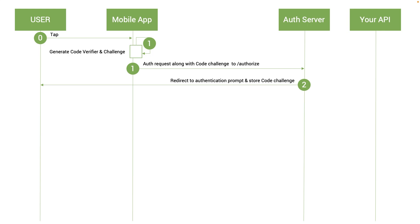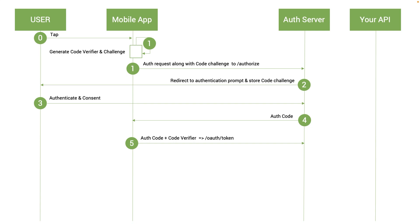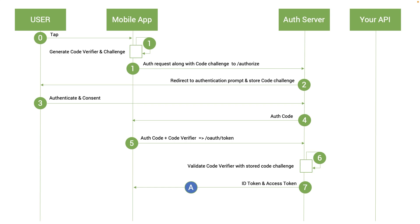The server stores the code challenge and redirects to the authentication prompt. The user sees the authentication and consent screen and approves it. Once they do, the authorization code is generated. The auth code together with the code verifier is posted to the OAuth token endpoint to be exchanged for an access token. The server then validates the code verifier against the stored code challenge.